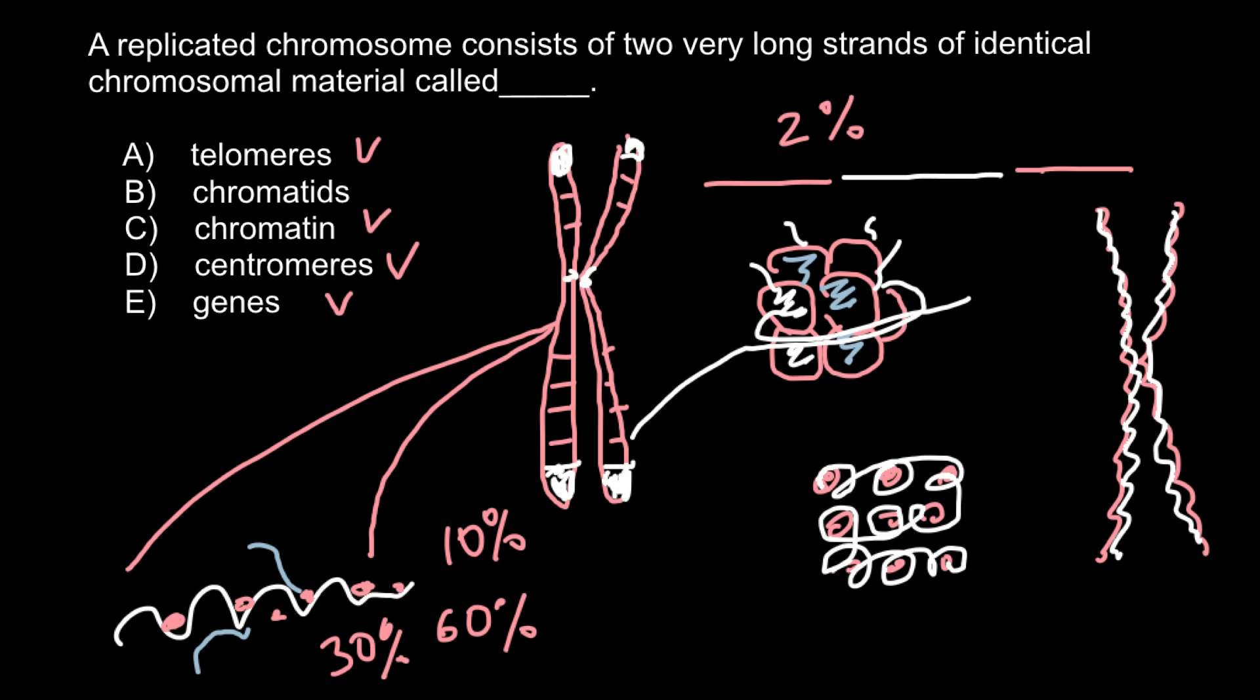So the correct answer, as you see, is answer B. A replicated chromosome consists of two very long strands of identical chromosomal material called chromatids, or to be exact, sister chromatids. And this is all for today.